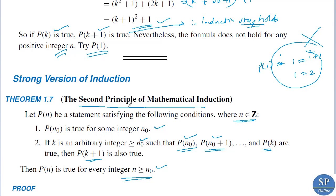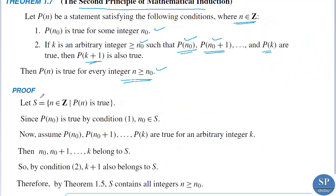Then P(n) is true for every integer n greater than or equal to n₀. This is the strong version of induction, that is the second principle of mathematical induction. To prove this, let S be the set of all n belonging to the integers such that P(n) is true. By condition 1, P(n₀) is true.